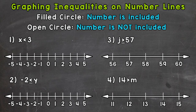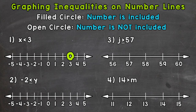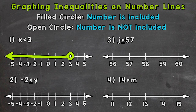Let's jump into number one where we have x is less than 3. Our variable x has to have a value less than 3. This is not a less than or equal to symbol, so we want an open circle because 3 is not included. We put an open circle on 3, indicating we are not including 3 in our solutions. Since x is less than 3, we draw an arrow pointing to the left to represent all values less than 3.